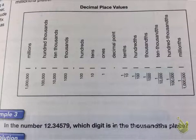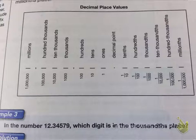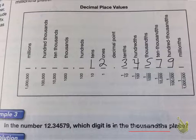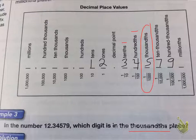This is a chart of the decimal place values. In the number 12.34579, which digit is in the thousandths place? So I write out 12.34579 and figure out which digit is in the thousandths place: tenths, hundredths, thousandths — so the 5 is in the thousandths place.